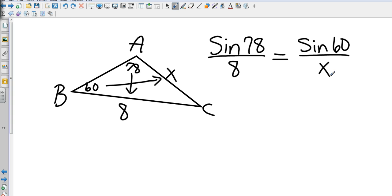And that's what we're going to try to find. So let's go ahead and pull up on the calculator here. We're going to find the sine of 78, and that is 0.9781 all over 8. And then we're going to find the sine of 60, which is 0.8660.